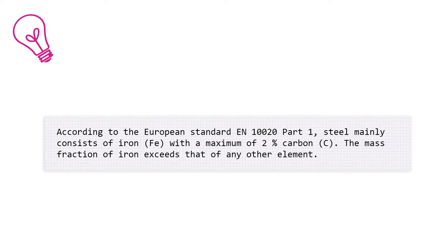According to the European Standard EN 10020 Part 1, steel mainly consists of iron Fe with a maximum of 2% carbon. The mass fraction of iron exceeds that of any other element.